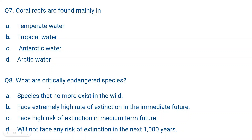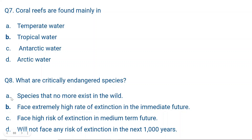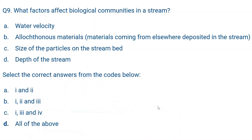Question number eight: What are critically endangered species? A. Species that no longer exist in the wild? No. B. Species that face extremely high risk of extinction in the immediate future? Yes. C. Species that face high risk of extinction in the medium-term future? No. D. Species that will not face any risk of extinction in the next 5000 years? No. The correct answer is B — critically endangered species face an extremely high rate of extinction in the immediate future.